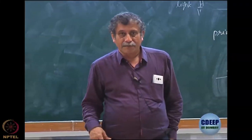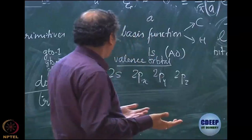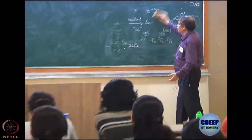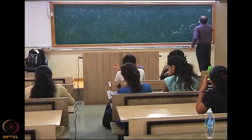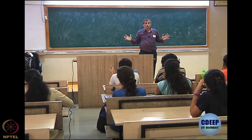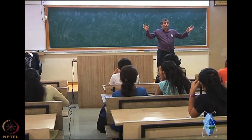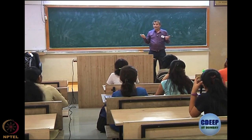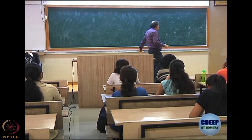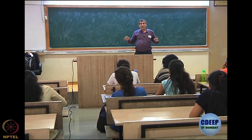We continue with CI and wanted to show some of the numbers on the contribution of doubles and singles. It was very clear that doubles were the most important part of the correlation energy compared to singles, mainly because of Brillouin's theorem and the two-particle nature of electron correlation. Singles are important only because they affect the doubles.